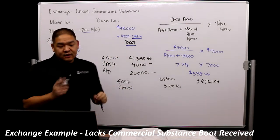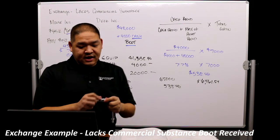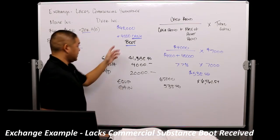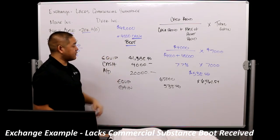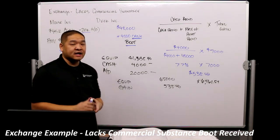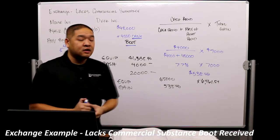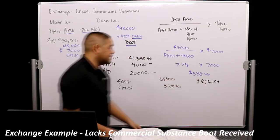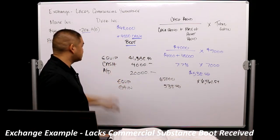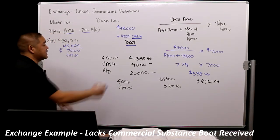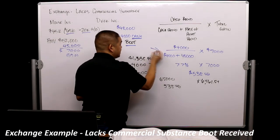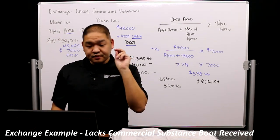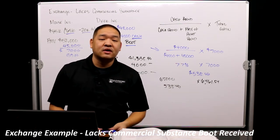This example isn't different than the other examples we talked about. The only difference here is boot received — cash received by the mouse in the amount of $4,000. GAAP says that we allocate a percentage of the boot received to gain — in this case 7.7% of the $7,000 is going to be the recognized gain. Small little differences, journal entry stays the same. All we're really doing is figuring out how much gain to recognize, since this is an exchange that lacks commercial substance but cash is received.